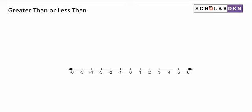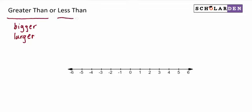Hi everybody. In this video we're going to talk about greater than or less than in terms of numbers. What does it mean for a number to be greater than or less than another number? Greater than is the technical math phrase for basically bigger. You could think of it as just bigger than or larger than. And less than is the mathematical term — we could say smaller, it's a smaller number. But we're going to see how that can be a little misleading when we get into negatives. Let's start with the more straightforward positive numbers.